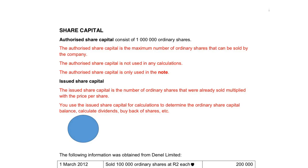The authorized share capital of a company, for instance, may consist of a million shares. So that means the total number of shares that they can issue is a million. The authorized share capital is the maximum number of shares that can be issued — they cannot issue more than a million shares.